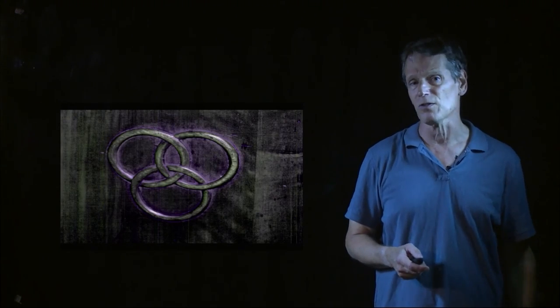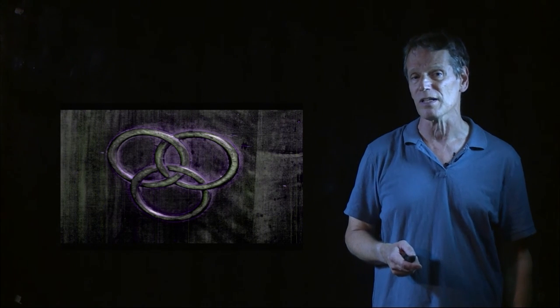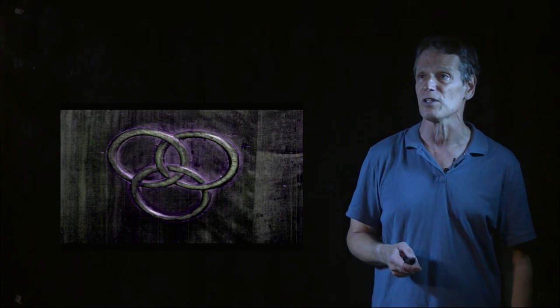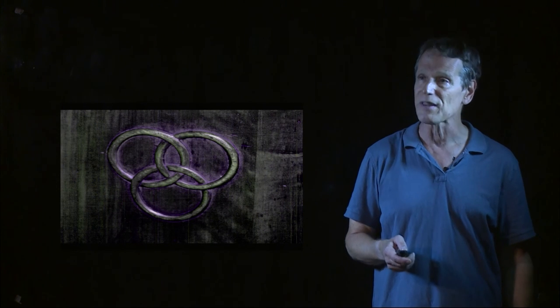Now, this actually appears if you go to Italy, to Venice, Italy, and you go to the Borromea family house. This appears as their insignia, and it's carved on the doors of the Borromea house. And so here you see a carving of the Borromean rings on that door right there.